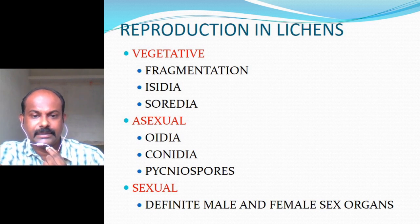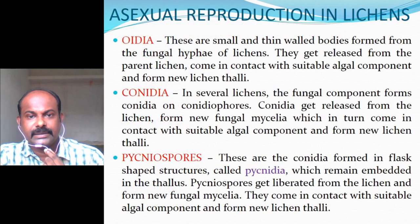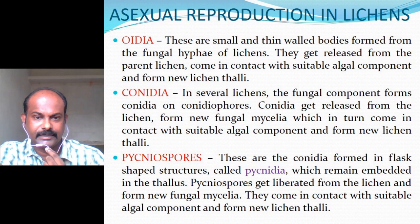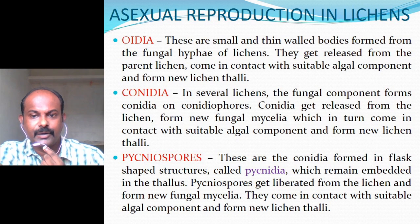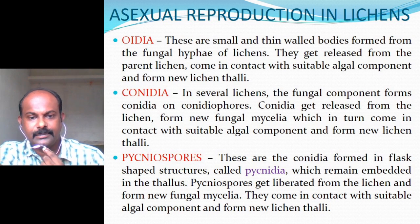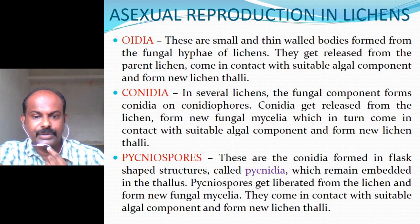Sexual reproduction involves definite male and female sex organs. Regarding asexual reproduction: oidia are small thin-walled bodies formed from fungal hyphae; they get released, come in contact with suitable algal components, and form new lichen thalli. In several lichens, the fungal component forms conidia or conidiophores; conidia get released, form new fungal mycelia, and in turn come in contact with suitable algal components to form new lichen thalli. Pycniospores are conidia formed in flask-shaped structures called pycnidia, which remain embedded in the thallus. Pycniospores get liberated and form new fungal mycelia, then come in contact with suitable algal components to form new lichen thalli.